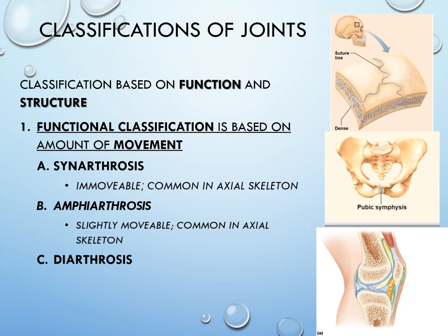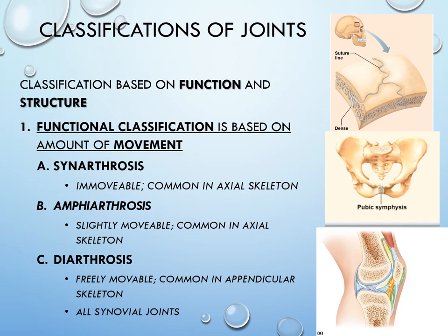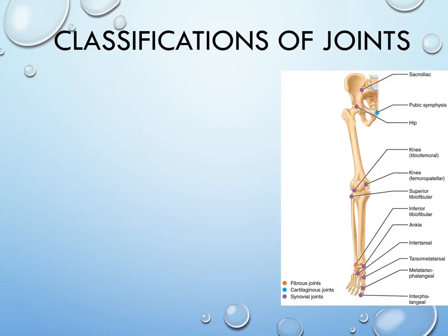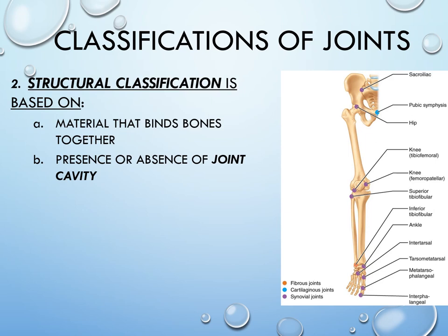Amphiarthrosis includes something like the pubic symphysis, which has fibrocartilage and allows for a little movement — useful in childbirth. The most common type we think of is diarthrosis, which is freely movable. All synovial joints are considered diarthrotic joints, and this is very common in the appendicular skeleton — our appendages and limbs — because our limbs are so mobile.